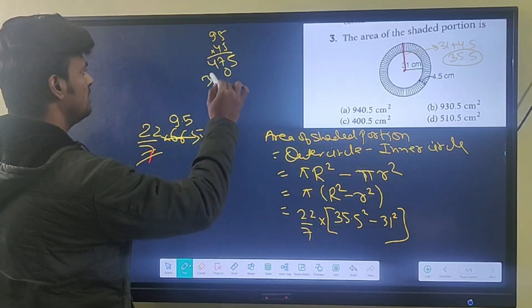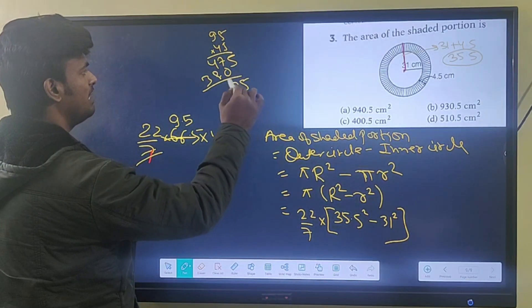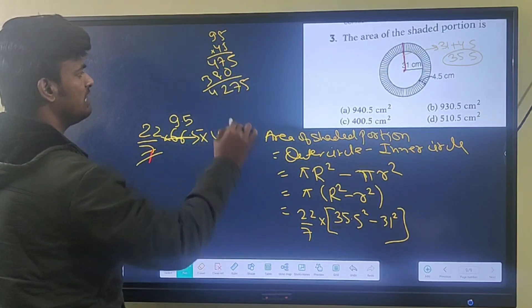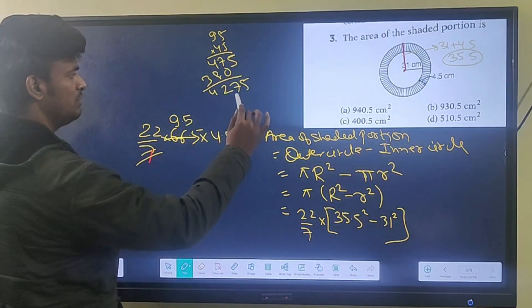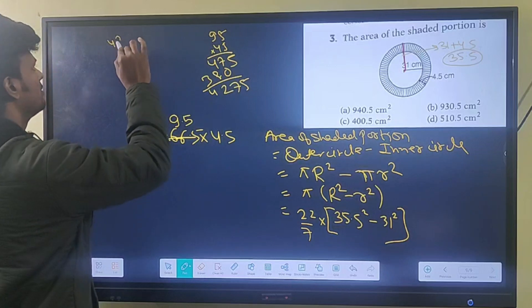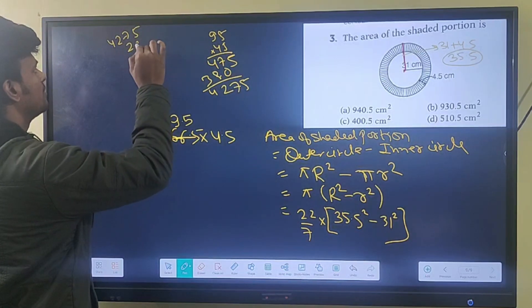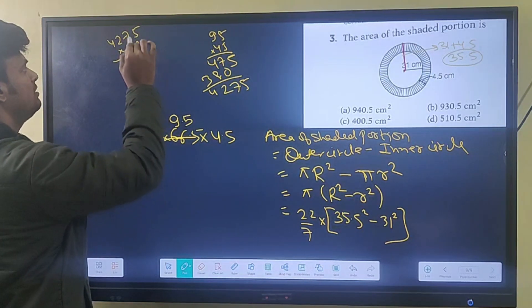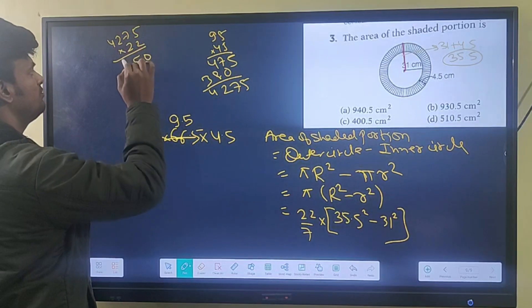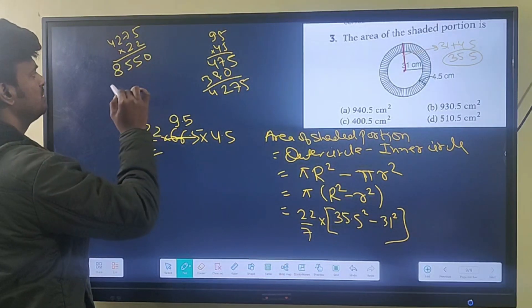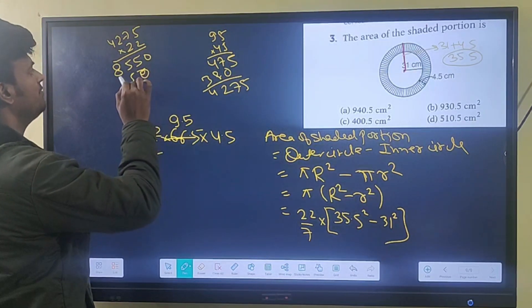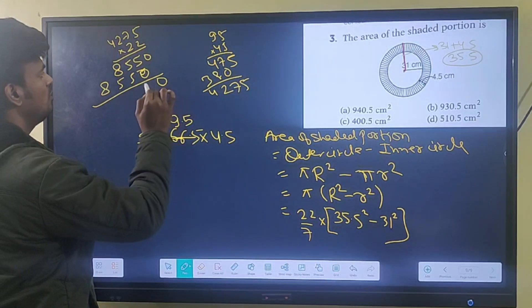36 plus 2 is 38. This will be 4 12 3, 4275. 22 multiply 3225. This will be 055.8.